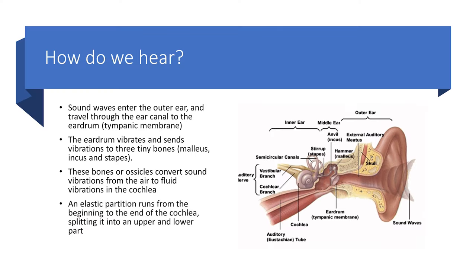So if noise is just air molecules vibrating, how do we actually hear it? Humans have the ability to hear due to the complex system of signal transduction within our inner ear. Sound waves enter the outer ear, travel through the ear canal to the eardrum — also known as the tympanic membrane — which vibrates and sends those vibrations through three tiny bones, or ossicles, in the inner ear: the malleus, incus, and stapes. These bones convert sound vibrations from air to fluid vibrations in the cochlea.